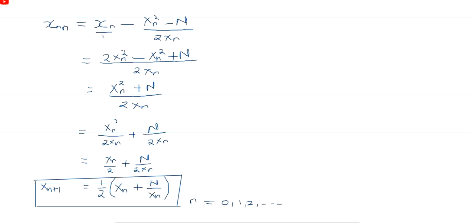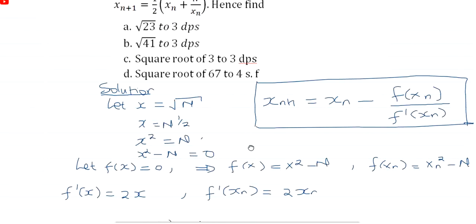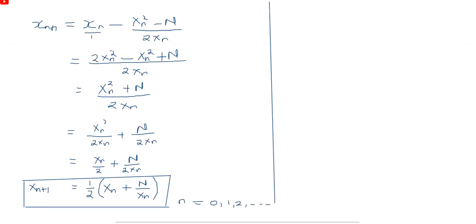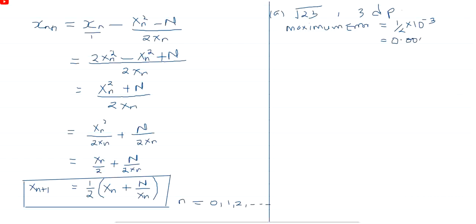We now need to use this formula to find the square root of 23. Part A requires us to find the square root of 23 to 3 decimal places. Three decimal places means we need the maximum possible error, which equals one half times 10 to the power of negative 3, and this is equal to 0.0005.